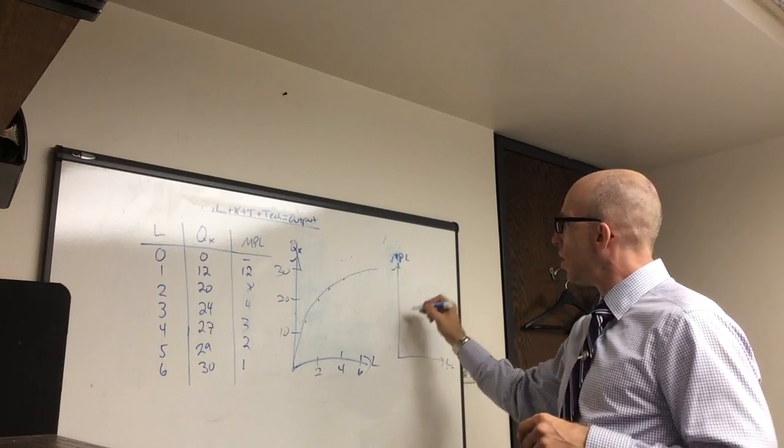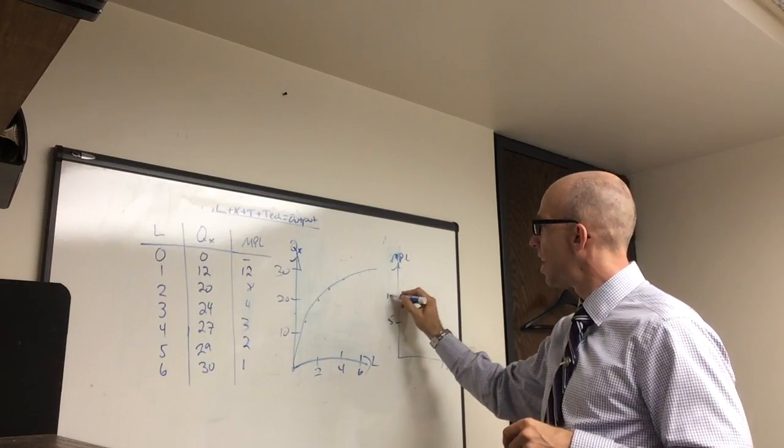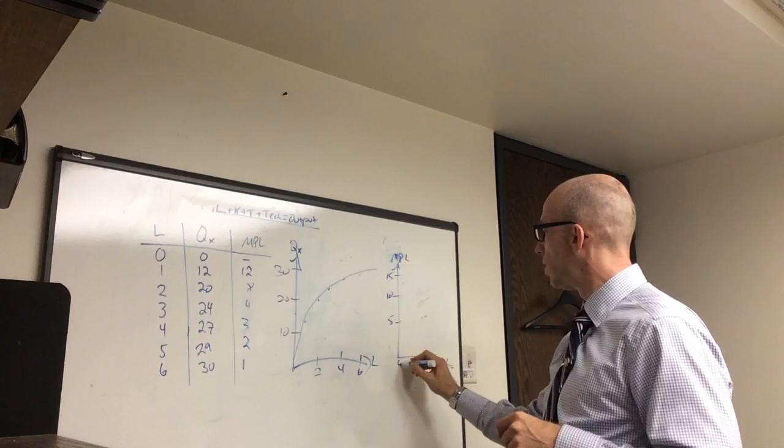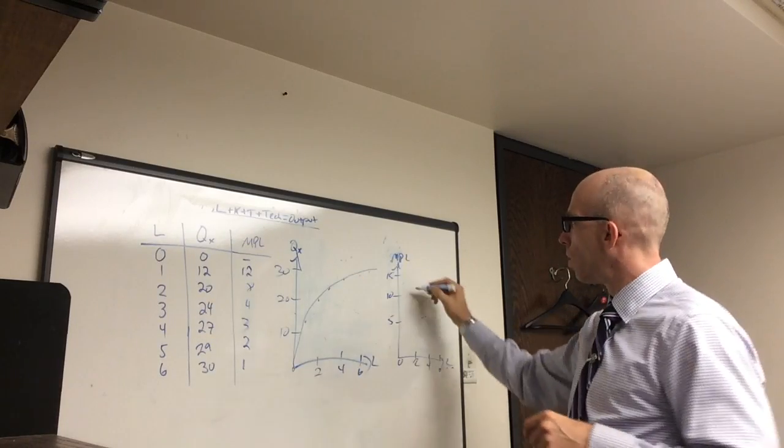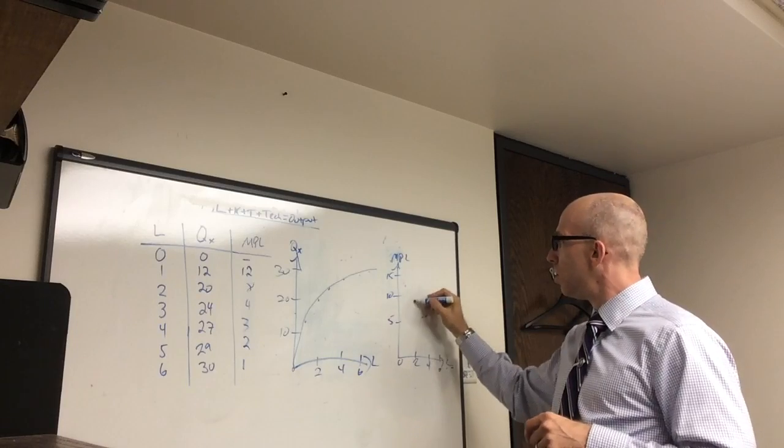If you plot this, you might say 5, 10, 15, 0, 2, 4, 6. So 1 worker produces 12, 2 produces 8,